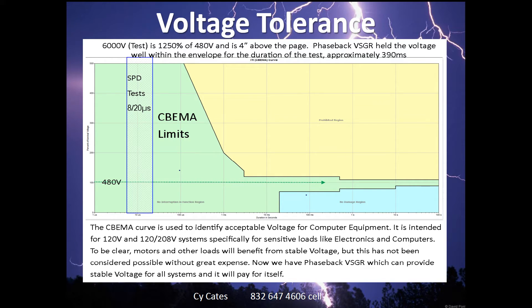The horizontal axis on this chart goes from one microsecond to 100 seconds. The vertical axis goes from zero volts per percent volts to 500 percent volts.